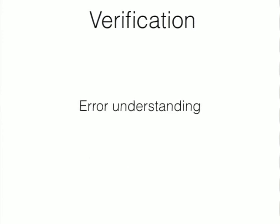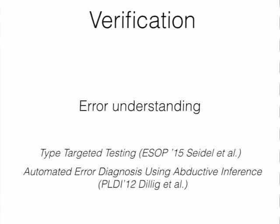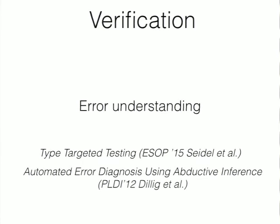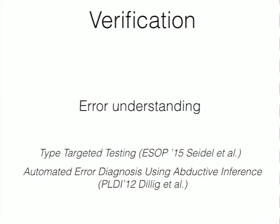One of the most difficult problems is how to explain errors. If verification fails, you have to explain the error to a user who is not deeply into verification and knows only the minimum needed. There is a lot of work on error reporting: Eric's Target tool gives counterexamples to help you understand why verification failed. There is also a nice paper that uses abductive reasoning so that the user and the tool interact together to understand why verification failed.